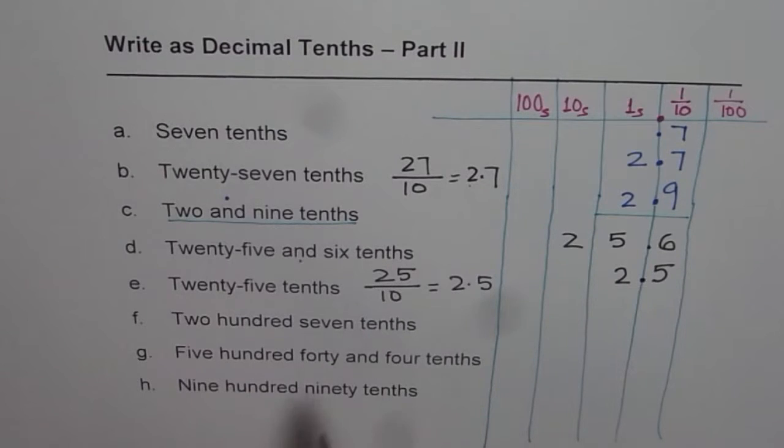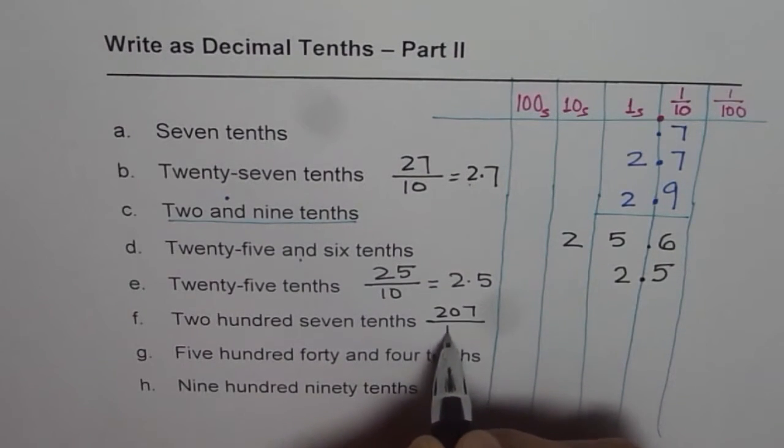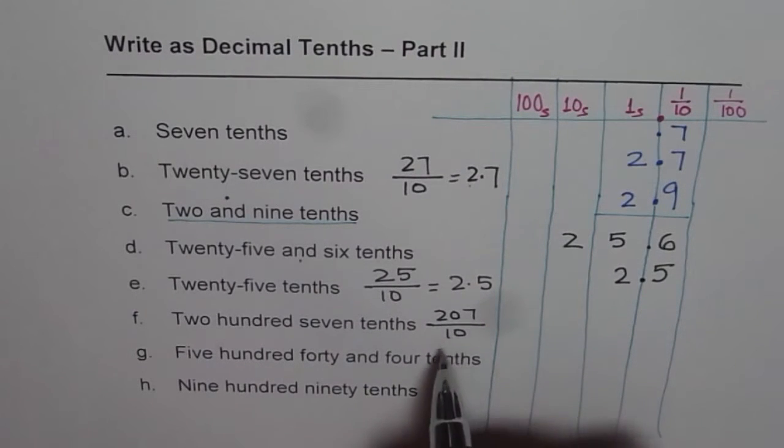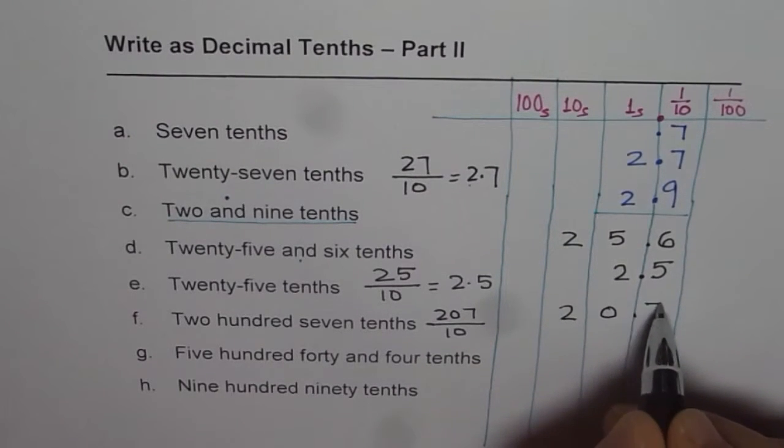Two hundred seven tenths. This time it is 207 tenths. Tenths means divide by 10. When you divide 207 by 10, you get 20.7.